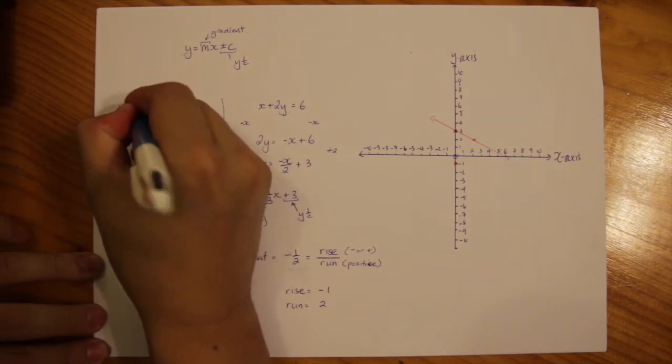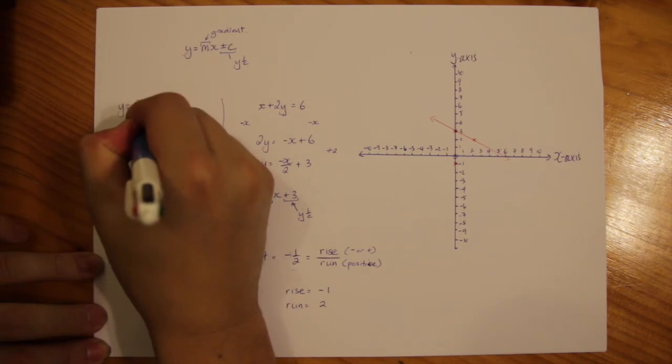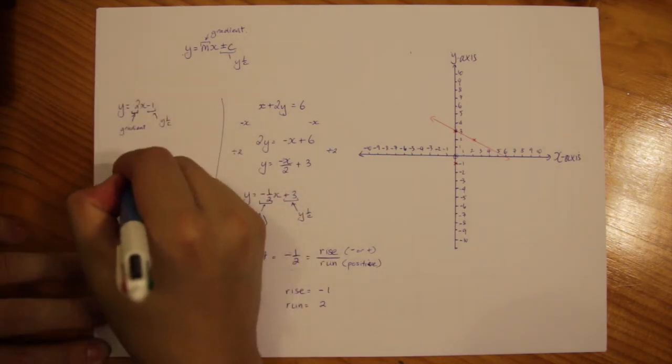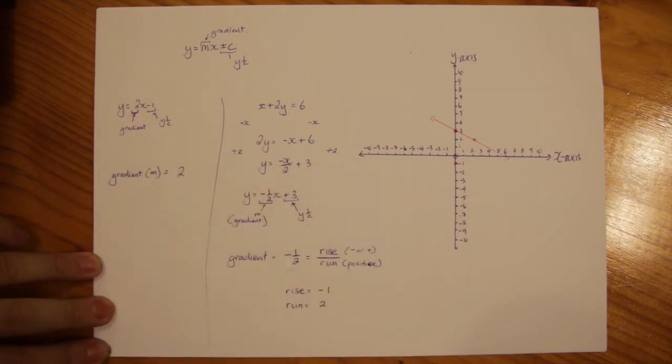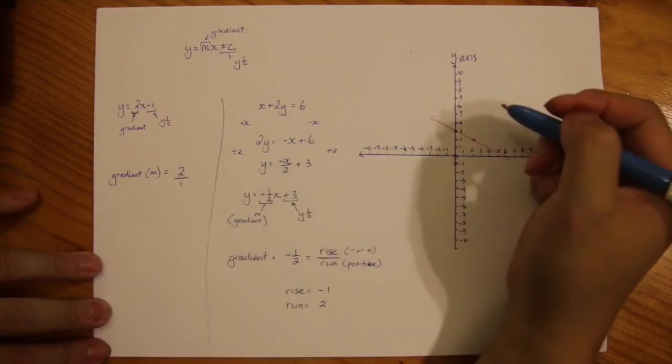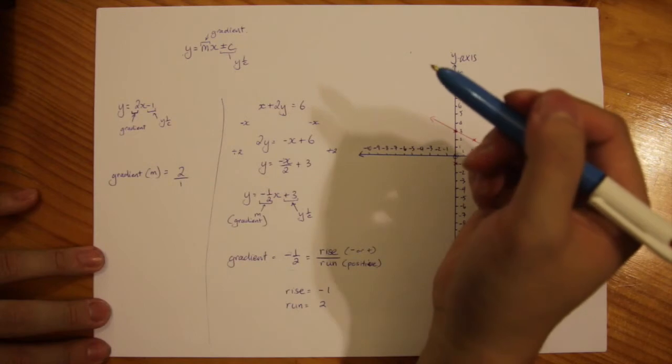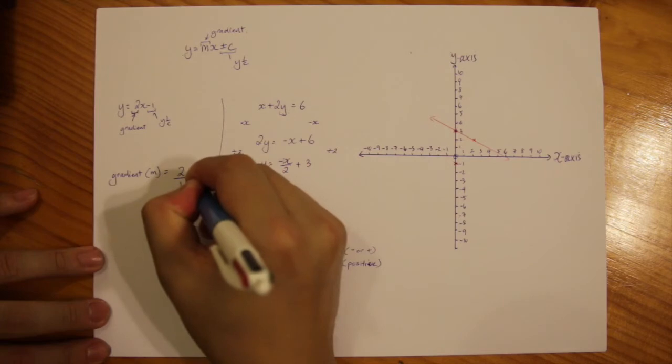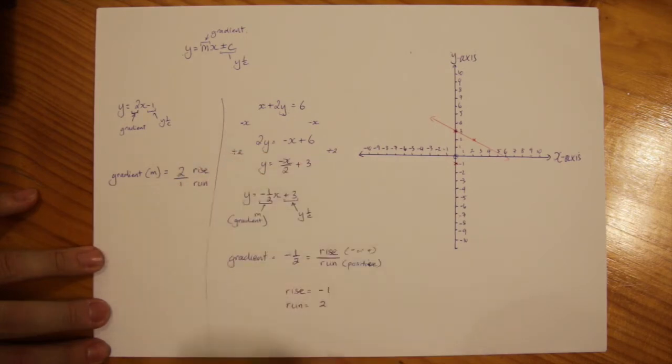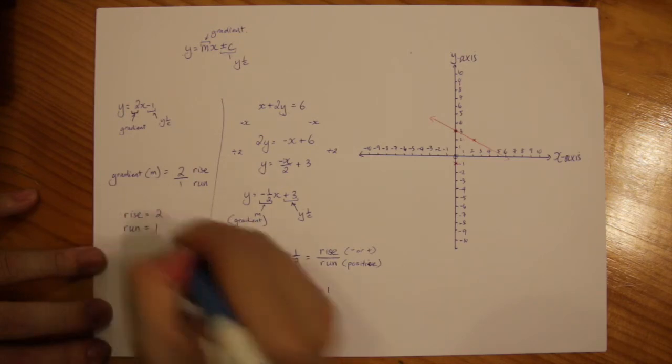Now what I need to do is work out the gradient. So my gradient, which is m, that is equal to 2. If we put this in fraction form, it's basically 2 over 1. So if you find that your gradient m is a whole number, always put it over 1. So my top number is my rise and the bottom number is going to be my run. Rise is 2, run is 1.